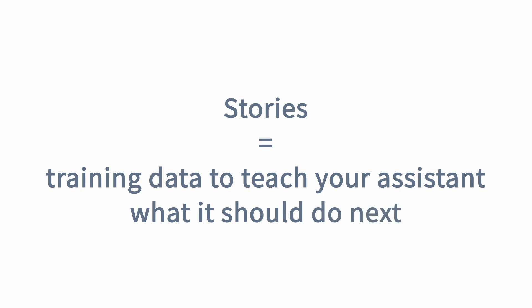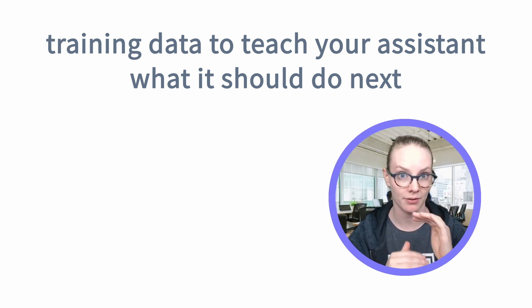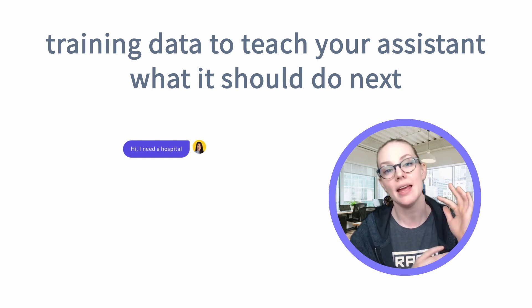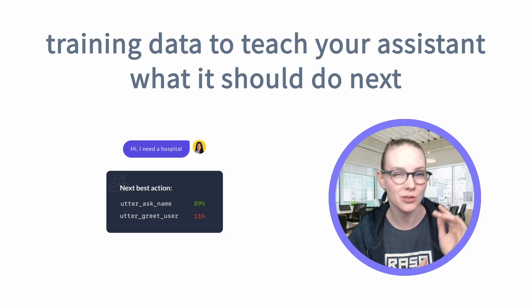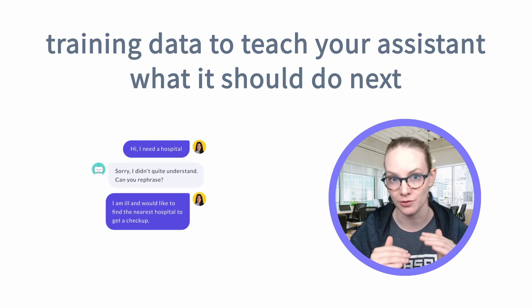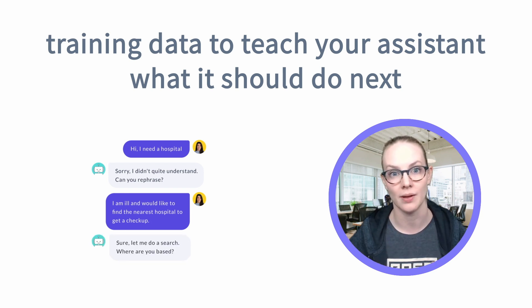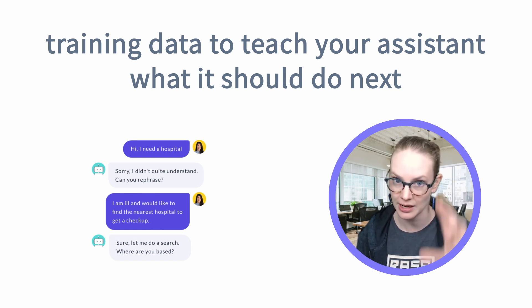So what are stories? Stories are training data to teach your assistant what it should do next. If the assistant is having a conversation and you have a story that follows the exact pattern — which often happens — the pattern detailed in the story will be used via a memoization policy. If however the user says something the assistant hasn't seen before, it will look at all those stories using something called the TED policy to guess the most likely next action. If confidence isn't above a set threshold, it will do a fallback.